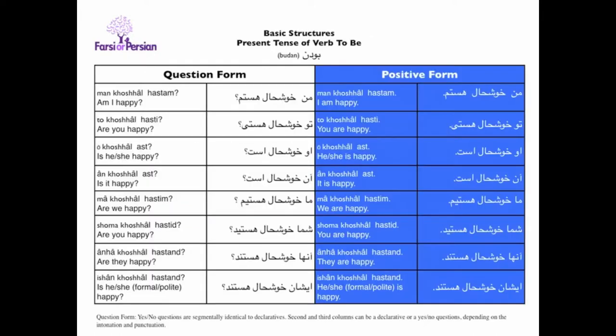The basic structure in affirmative and question follows this pattern. Now observe the conjugation in each case. Positive form: من خوشحال هستم، تو خوشحال هستی، او خوشحال هست، آن خوشحال هست، ما خوشحال هستیم، شما خوشحال هستید، آن‌ها خوشحال هستند.